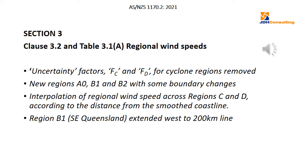There have been some boundary changes and new regions created: A0, B1, and B2. Region B in the 2011 standard has been split into two parts. B1 is the Southeast Queensland part, dominated more by severe thunderstorms than tropical cyclones, and has been extended further west from 100 kilometres to 200 kilometres from the coast, incorporating places like Toowoomba. B2 is an inland region affected by tropical cyclones. These changes are based on reprocessing of extreme wind data from the Bureau of Meteorology.